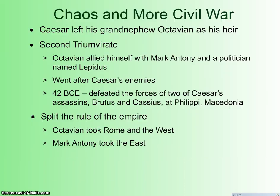What follows leads to chaos and more civil war. Caesar had left all of his duties to his heir, Octavian, who was his grandnephew — the son of his sister. Octavian combines with Mark Antony, who was Caesar's number one general, and another man named Lepidus. They form a triumvirate, similar to Caesar, Pompey, and Crassus, and they go after Caesar's enemies, defeating them in battle — finally defeating Brutus and Cassius at a place called Philippi over in Macedonia in northern Greece.